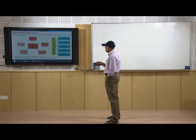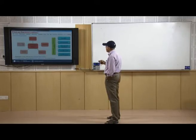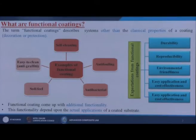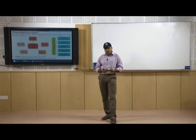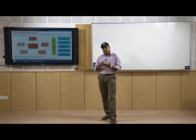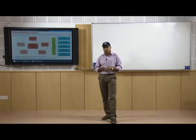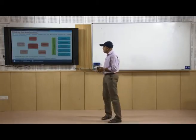The term functional coatings describes systems other than the classical properties of a coating, such as decoration or protection. Sometimes we are doing coatings for ornamental purposes, simply changing the outside aesthetic properties of a material so it looks good or glitters. Sometimes we are putting coatings for safety purposes so that the material does not directly interact with the environment — water, moisture, acidic or basic conditions.